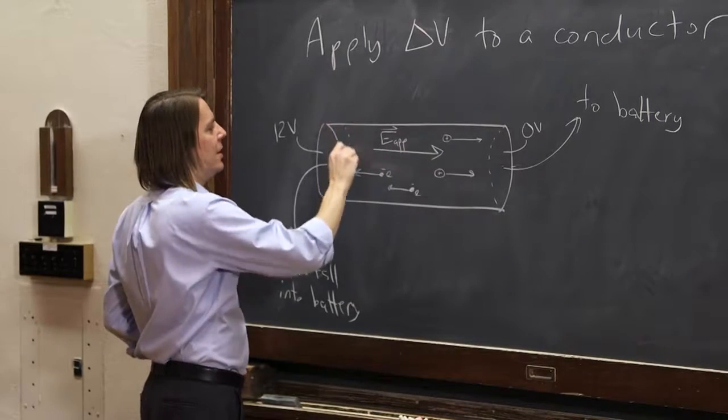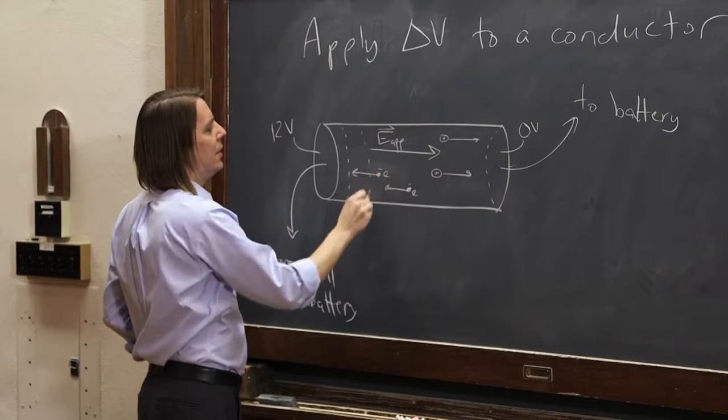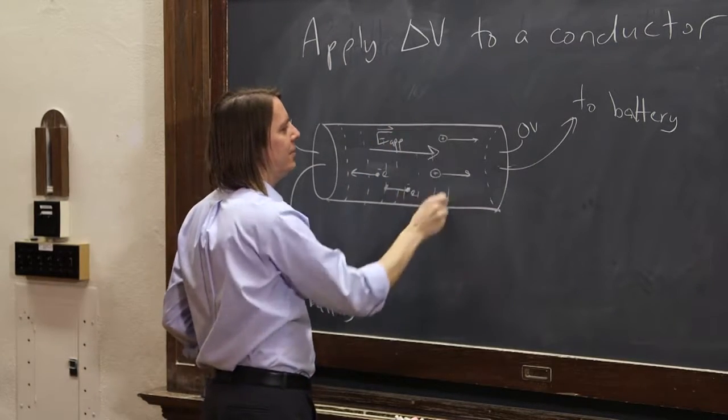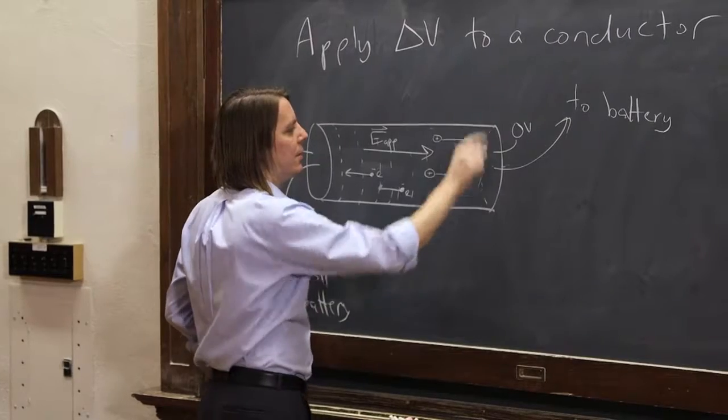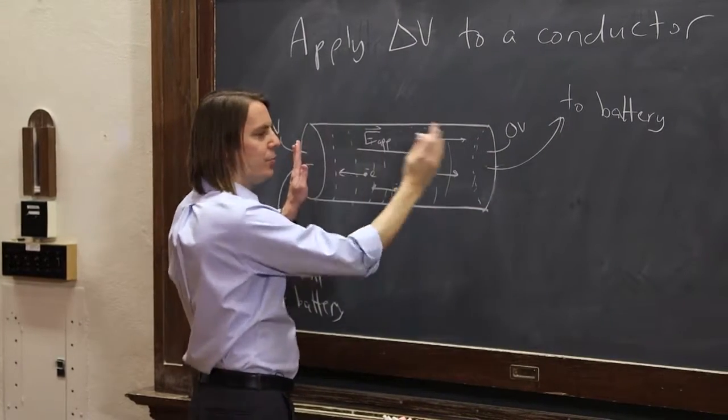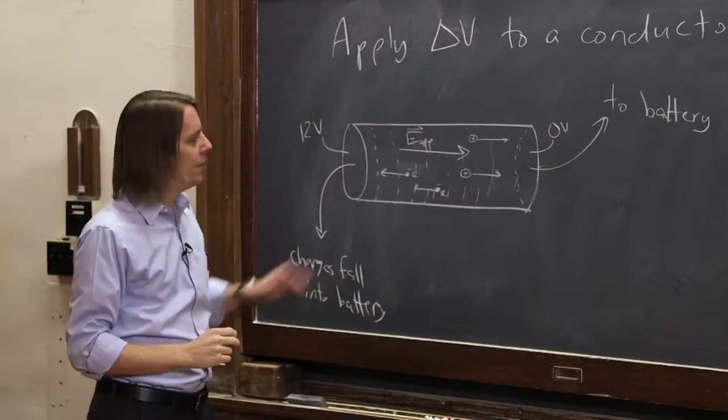Since we have an E applied, there's the 11-volt line, and the 10, and the 9, and the 8, 7, 6, 5, you get the idea, down to zero. So this face is at 12, this is at zero, and the potential drops throughout the metal.